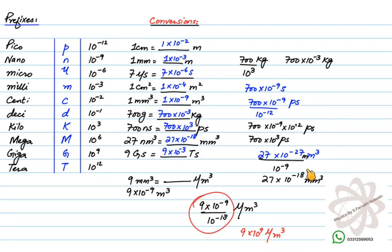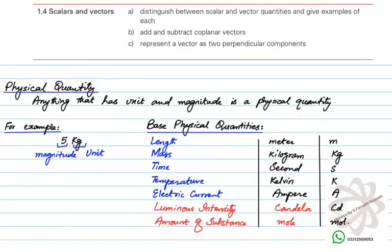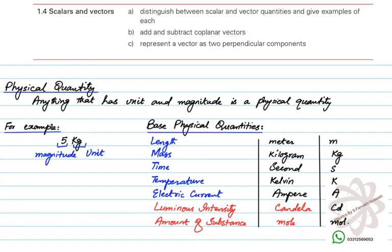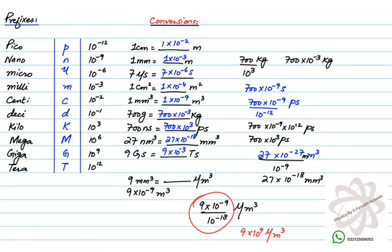So that was the first lesson. I hope you have a great understanding of prefixes and conversions, what a physical quantity is, what a base physical quantity is, and what must be part of an expression to make it a physical quantity. If you have any questions regarding physical quantities, prefixes, and conversions, feel free to ask and comment. Thank you.